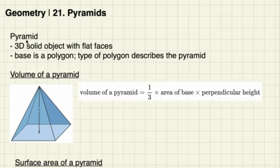So we can all recognize a pyramid when we see one, but how do we define one? Well, a pyramid is a three-dimensional solid object with flat surfaces, and at the base of the pyramid is a polygon. The type of polygon describes the pyramid.